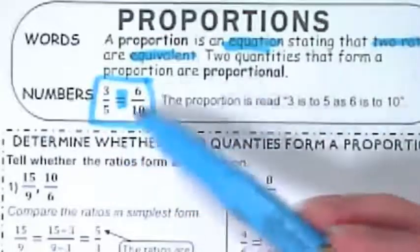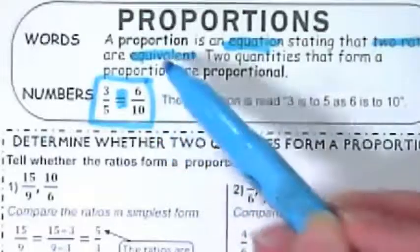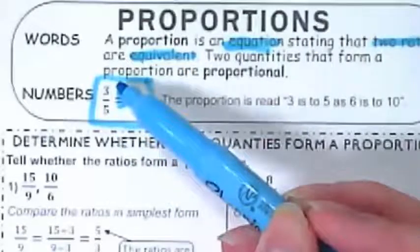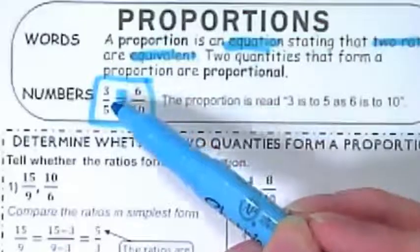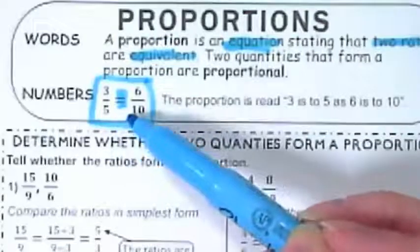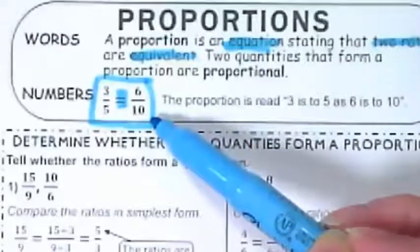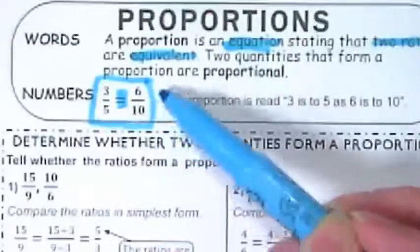If these were equivalent fractions, we would say 3 fifths is equal to 6 tenths. But we're saying 3 is to 5 because it could be 3 apples to 5 oranges as 6 apples to 10 oranges, because we're comparing two quantities.